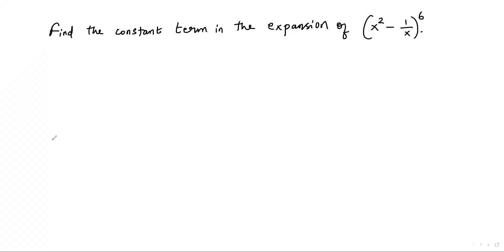In this video we are going to see a problem on binomial expansion. Let's go over the question: find the constant term in the expansion of x squared minus 1 over x, all to the sixth power.